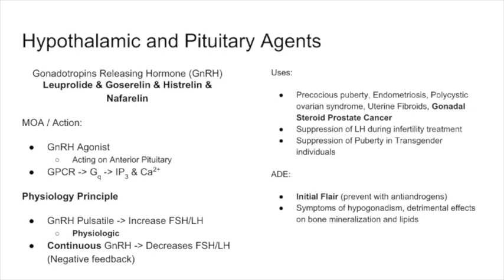Our gonadotropin releasing hormones are coming from the hypothalamus and they are acting on our pituitary — anterior or posterior depending on the hormone. GnRH agonists include leuprolide, goserelin, histrelin, and nafarelin. At least three of them have a suffix you can use. These are acting on the anterior pituitary and are G-protein-coupled, GQ-mediated IP3 calcium receptors.